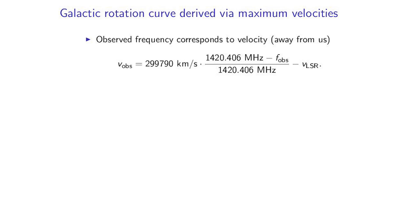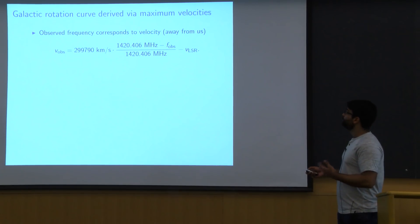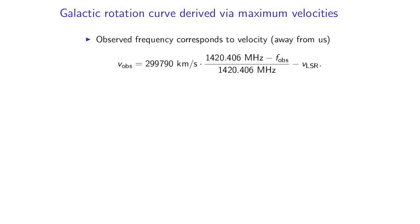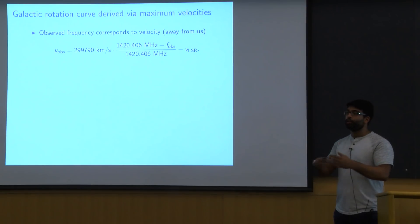So as we mentioned before, given a frequency, we can turn that into a velocity using our Doppler shift via this formula. This 1420.4 megahertz is just the emission frequency of the 21 centimeter line. This right here is just the speed of light. And then we have this V_LSR. This is just our velocity with respect to the sun, just to factor out any revolution that we have around the sun. So this V observed is actually the velocity with respect to the sun, not with respect to us.